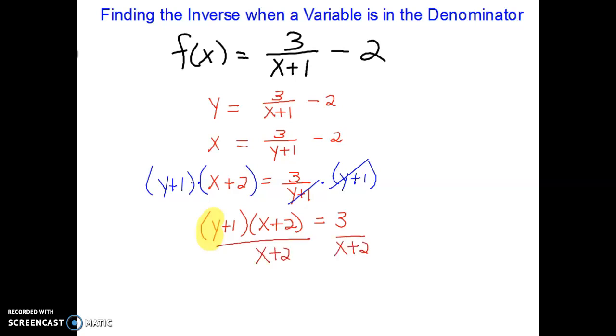Since I only have y in one of the quantities, I can just divide by that whole quantity x plus 2. That means this would divide out, so now I'm just left with y plus 1 on the left, and then I have 3 over x plus 2 on the right.